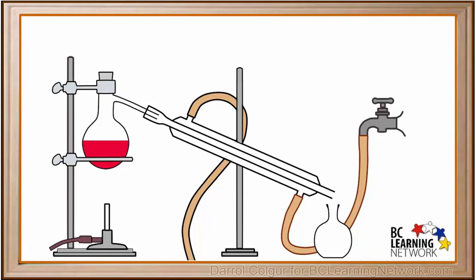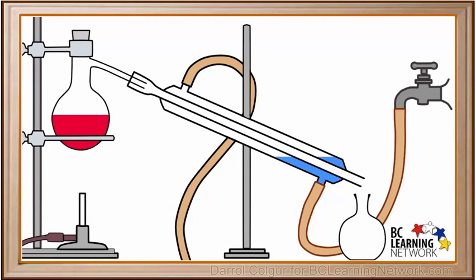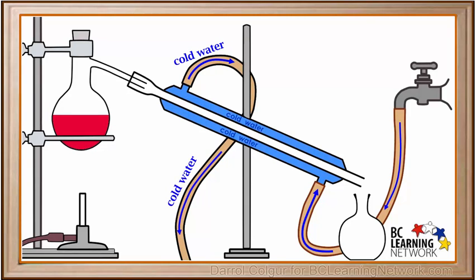Now we'll attach the hose on the bottom of the condenser to a cold water tap. When we turn the tap on, cold water runs into this hose. The cold water fills the outer jacket of the condenser. After the jacket is filled, the water comes out of the top and drains out through the hose on the left, where it goes into a sink. Cold water keeps circulating through the outer jacket of the condenser.